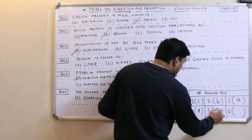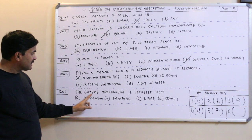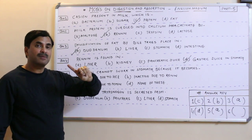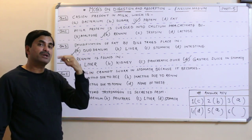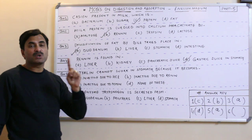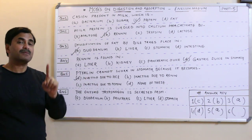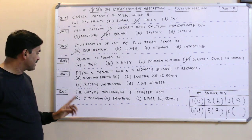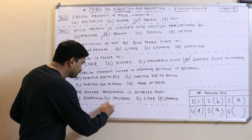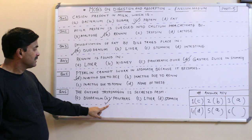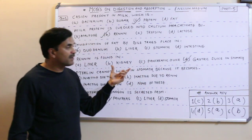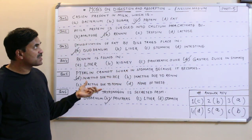Question number six: the enzyme trypsinogen is secreted from where? Trypsinogen is a pro-enzyme (inactive enzyme) that is later converted into trypsin. It is found in pancreatic juice, which is secreted by the pancreas. So the answer must be the pancreas. Question number six has the answer B: pancreas.